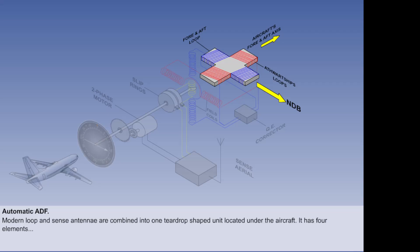This has a fixed loop with four elements, two aligned with the fore-aft axis of the aircraft and the other two with the lateral axis, rather like two cross-loop antennae.